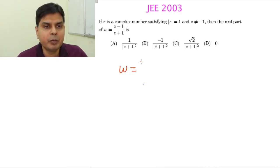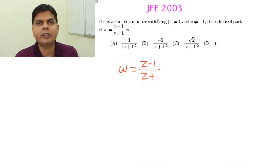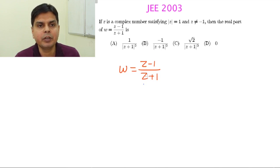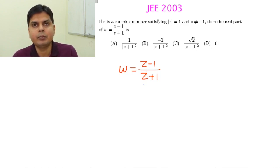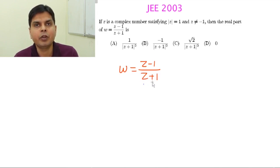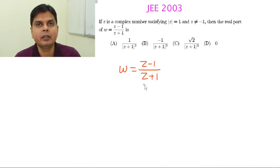In this question, W equals (Z minus 1) by (Z plus 1) and we have to find the real part of this complex number W. A very straightforward method of finding the real part of any complex number is to break it into real part plus i times imaginary part. The straightforward approach here is to multiply the denominator by the conjugate so that the denominator only has the modulus term, which is real, and then manipulate the numerator.